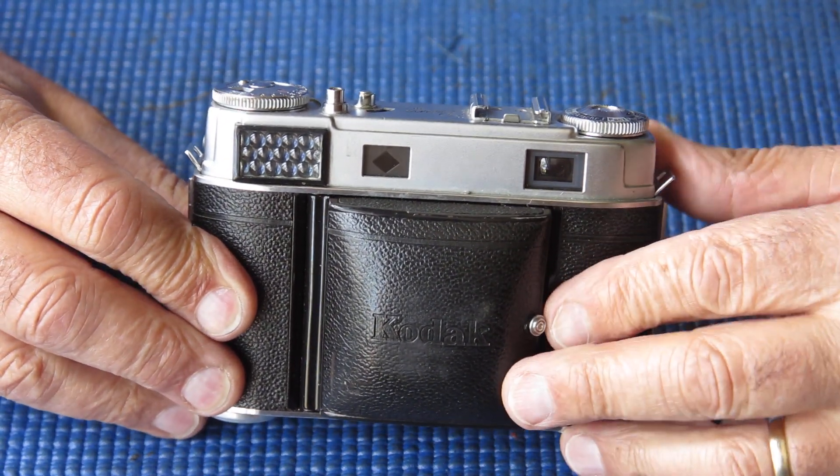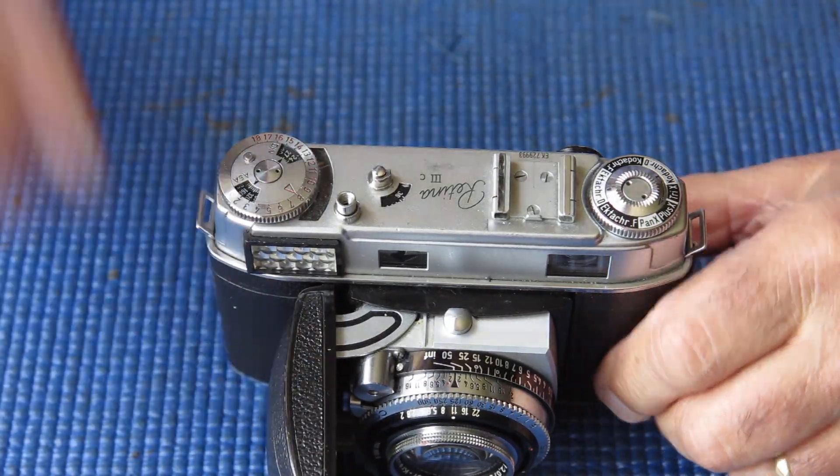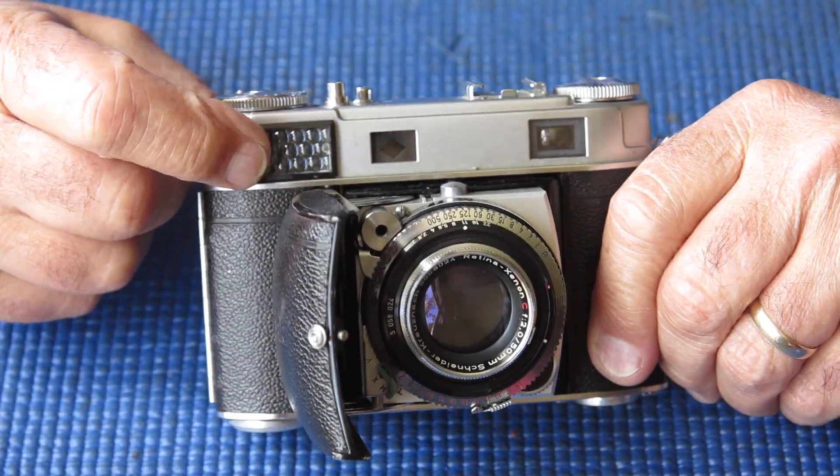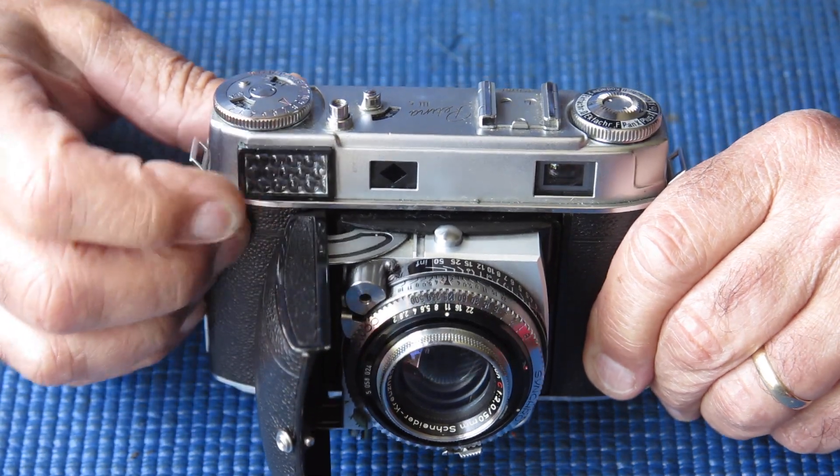Kodak Retina 3C, small c, the later type, the one that had the single range meter like the 3 big C.